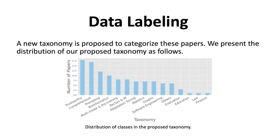We also present a new taxonomy for these papers. Here in this slide, we present the distribution of our proposed taxonomy. Note that this dataset is very class-imbalanced. For example, most papers belong to the trustworthy category, but for education, law, and finance, there is only one instance each.